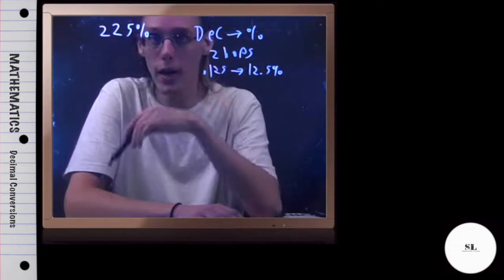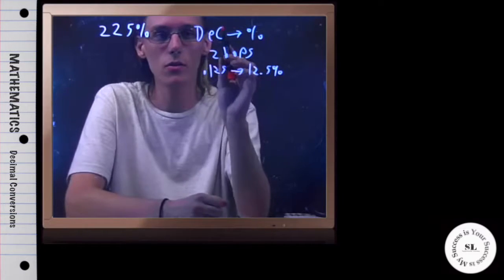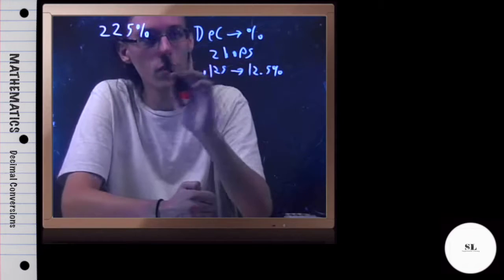If we're going backwards from percent to decimal, then we need to go backwards. Instead of hopping two to the right, we're going to hop two to the left. Make sure you always keep track of which way you're going.